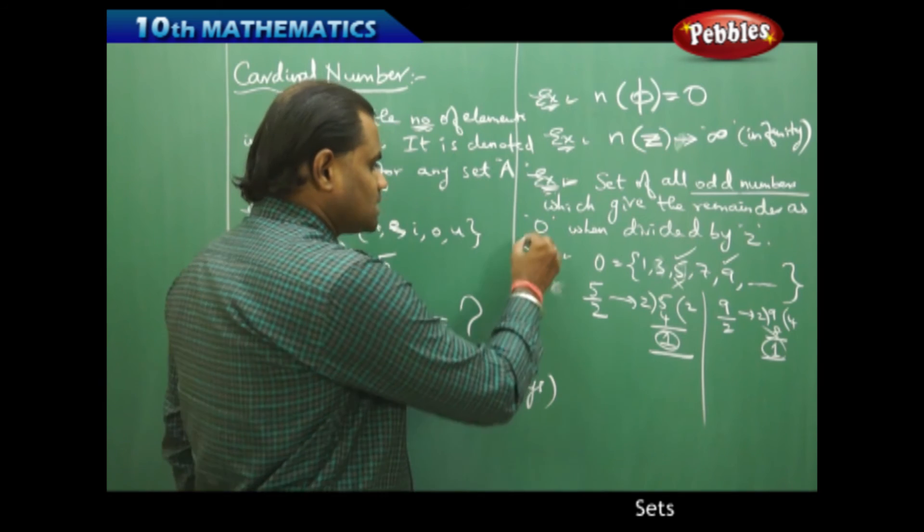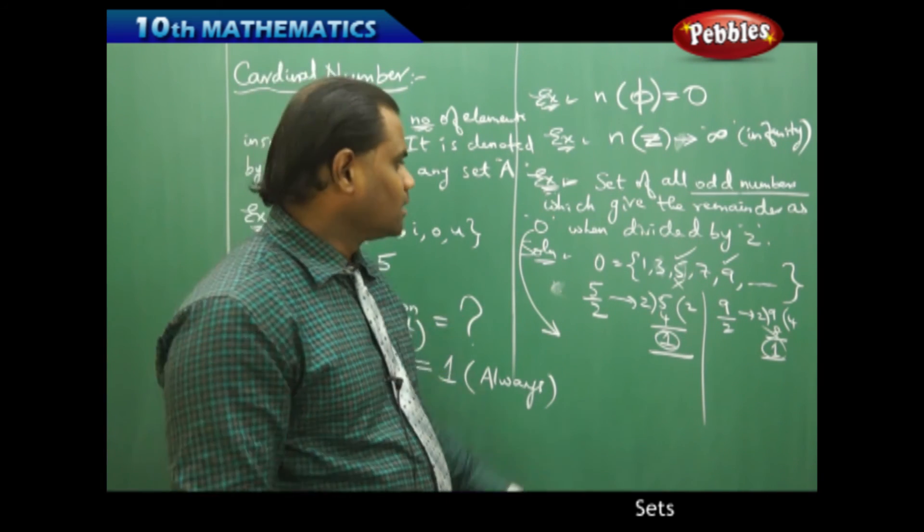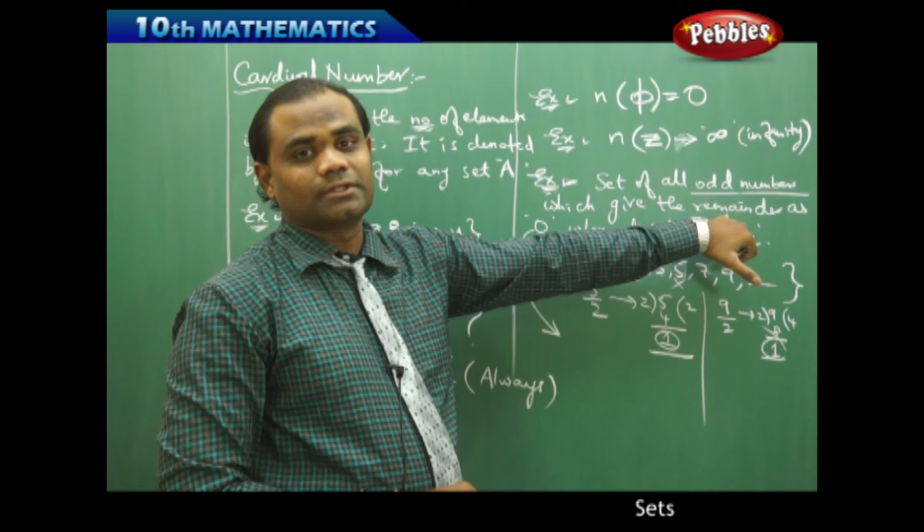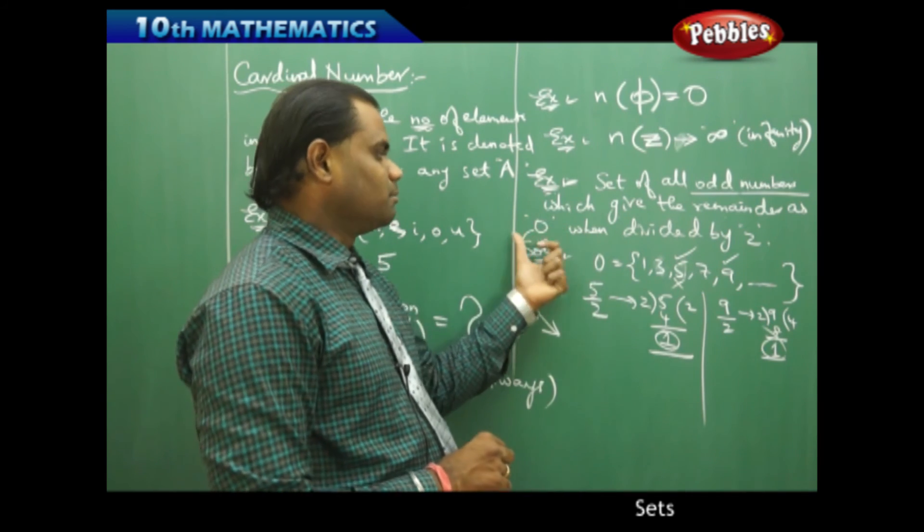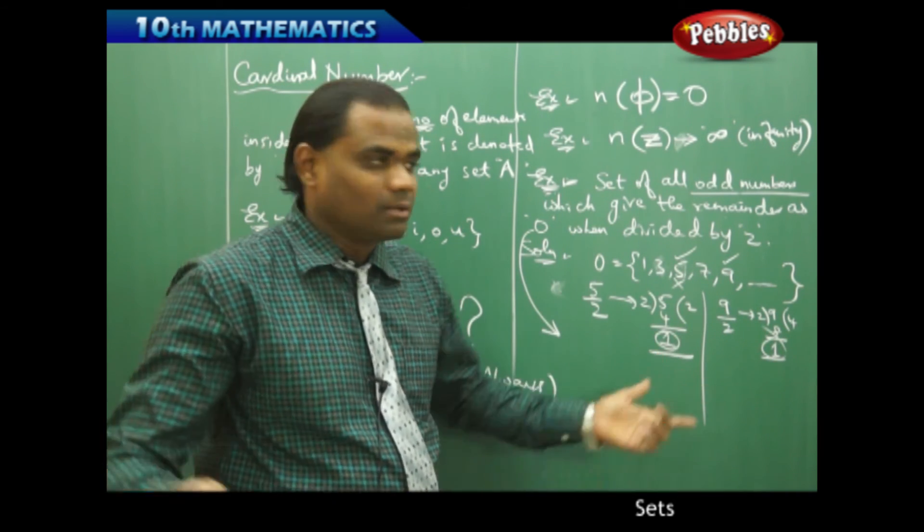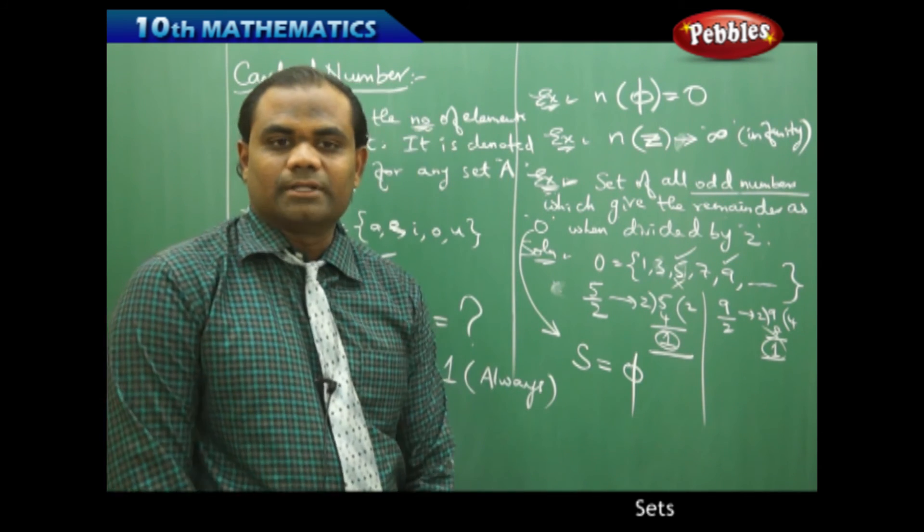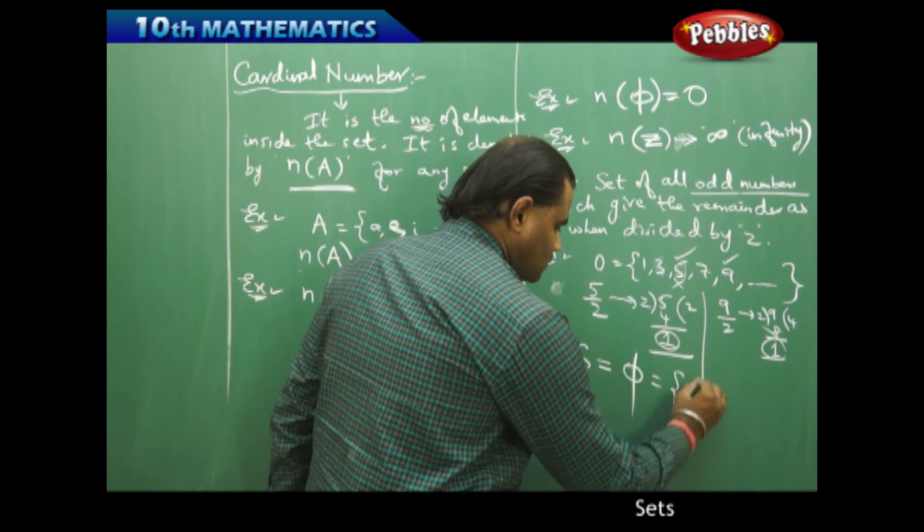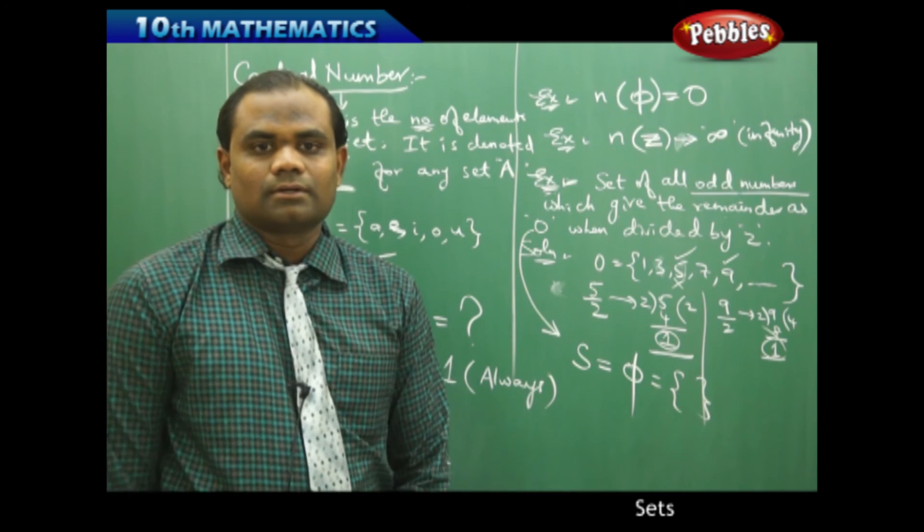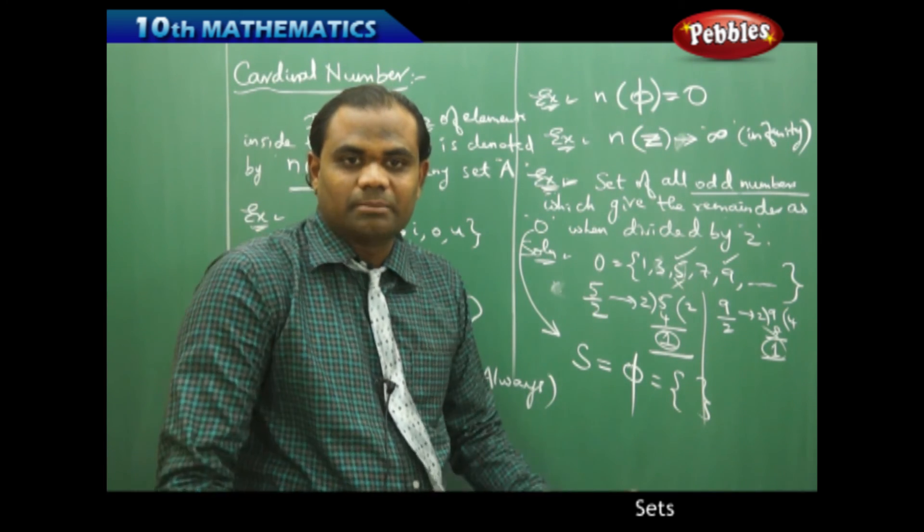Therefore, the whole set does not consist of any element or any number which satisfies the condition that it must be an odd number with remainder 0 when divided by 2. That means there is no element. The whole set is identified as the null set because there's no element inside.